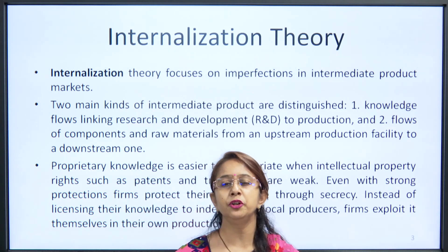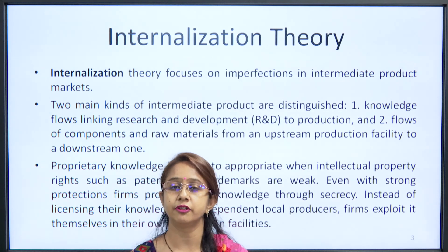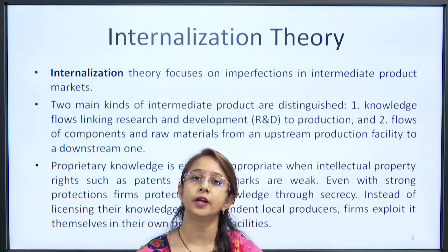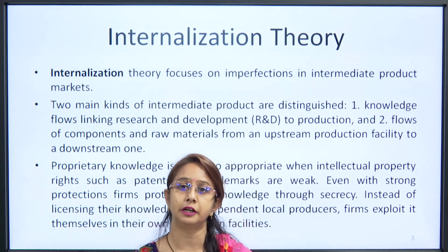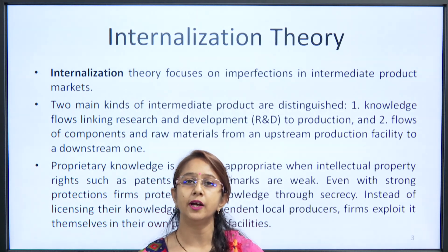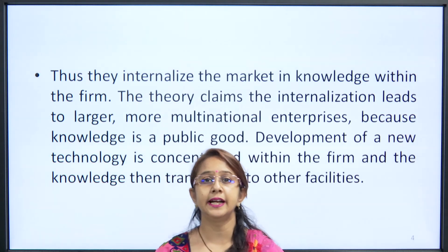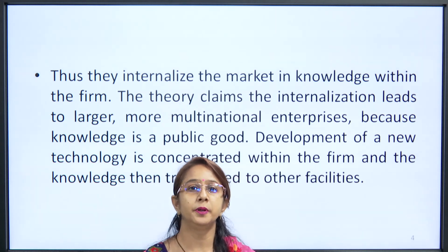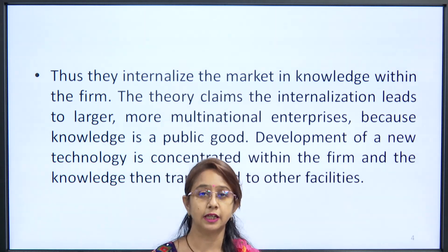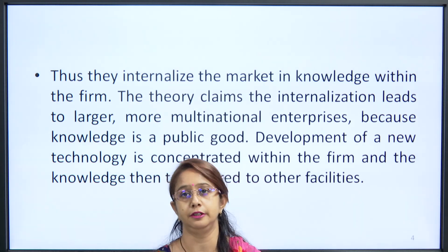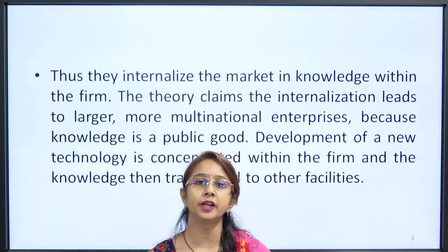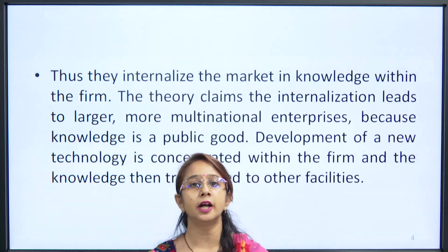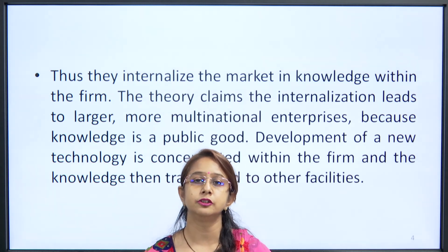From the imperfection theory, whatever new product or research and development the company has done can be used as a unique selling point or internal asset, while all other production functions can be shared with local vendors. The theory claims that internalization leads to larger, more multinational enterprises because knowledge is a public good. Development of new technology is concentrated within the firm and then transferred to other facilities — you keep developing new technology, giving licenses and patents to other local vendors.